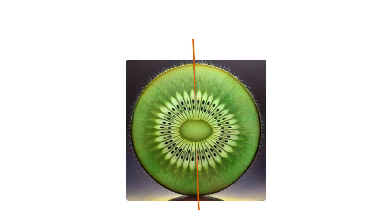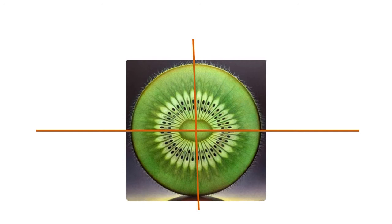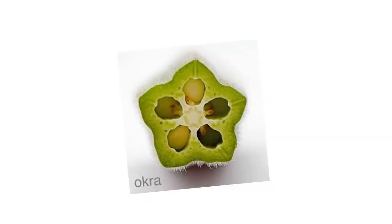The next one is a kiwi fruit. Here also we can divide it into two parts in two ways: one way is by using a vertical line and the other way is by using a horizontal line. These two lines are also dividing it into two parts which are identical and equal.